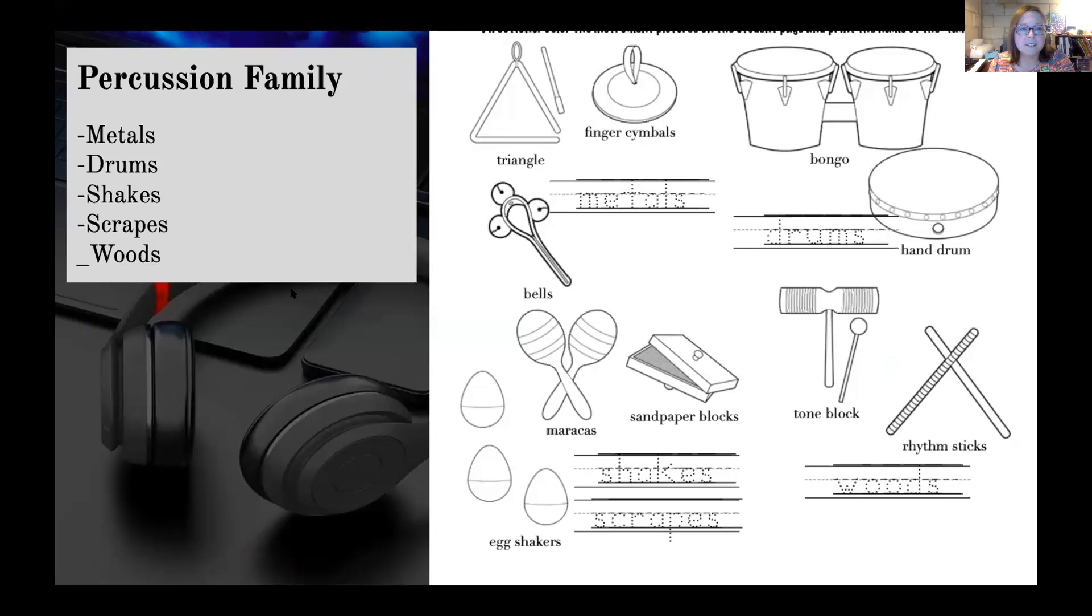So we talked about the different types of instruments, percussion instruments. We have metals like the bells, the triangle, the cymbals.